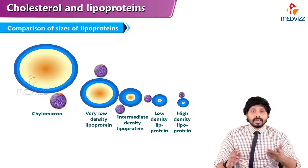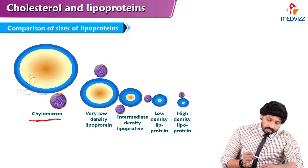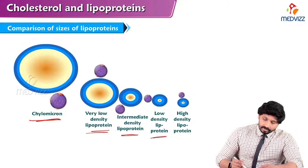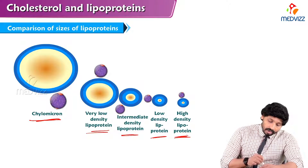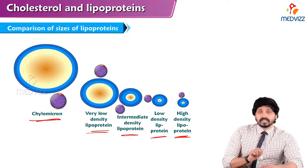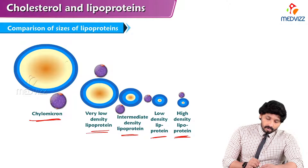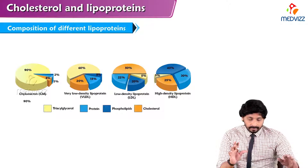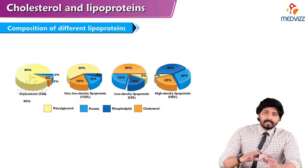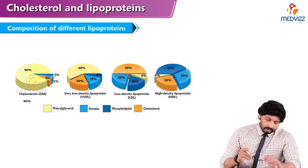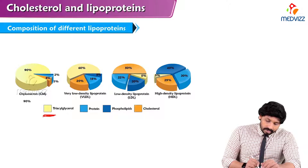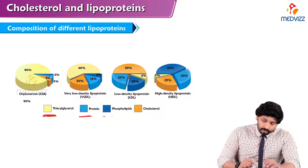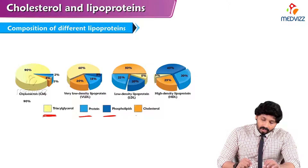Comparing size, chylomicron is the biggest, followed by VLDL, IDL, LDL, and HDL. In the distribution chart, different colors are used: yellow represents triglycerides, pale blue is protein, thick blue is phospholipid, and orange is cholesterol. You can see the composition of each lipoprotein represented by these colors.